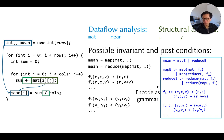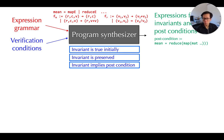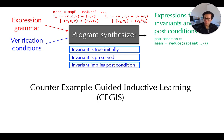We now have both ingredients to feed into the program synthesizer: the verification conditions as constraints governing what a valid solution looks like, and the expression grammar describing the space of programs to search over. The synthesizer will then come up with the invariants and postconditions we have been looking for. There are many different ways to solve this synthesis problem, but the ones we have used so far are basically different variants of the CEGIS algorithm.